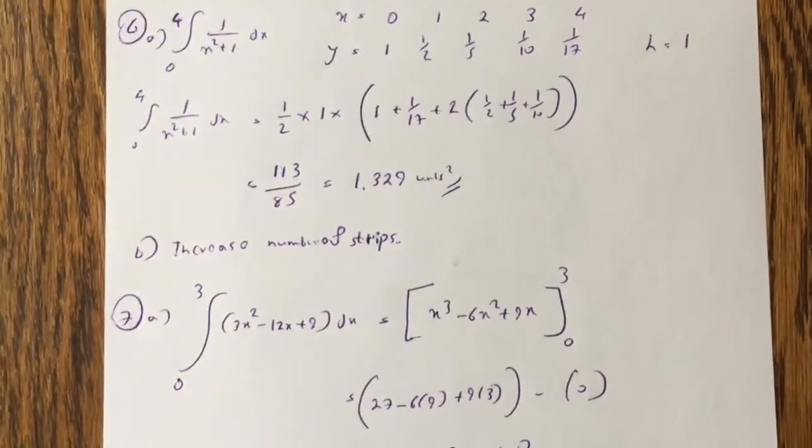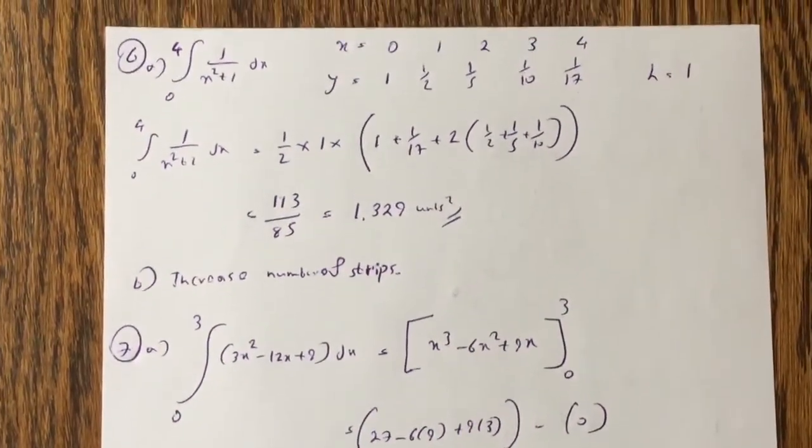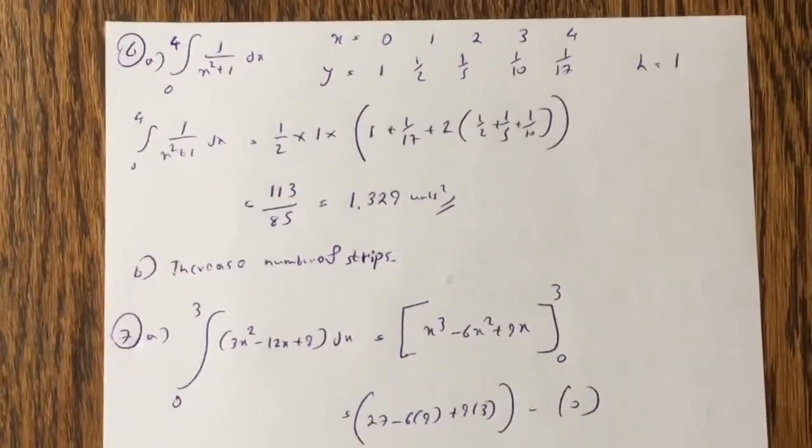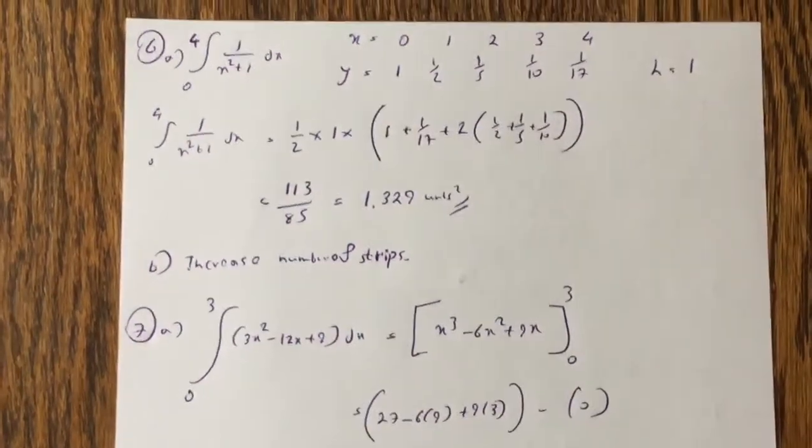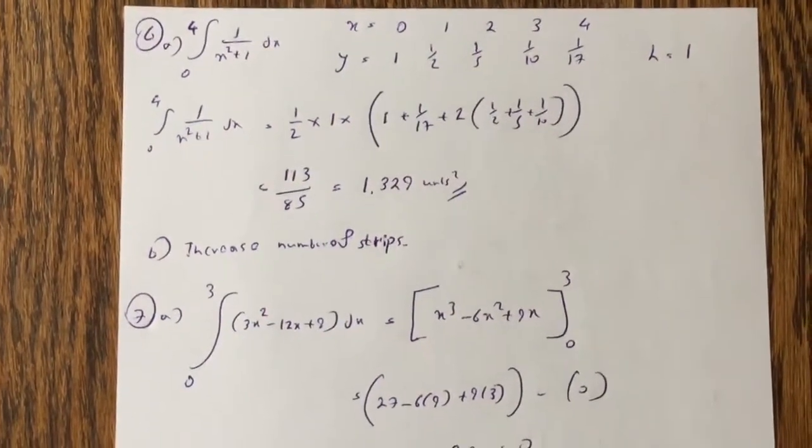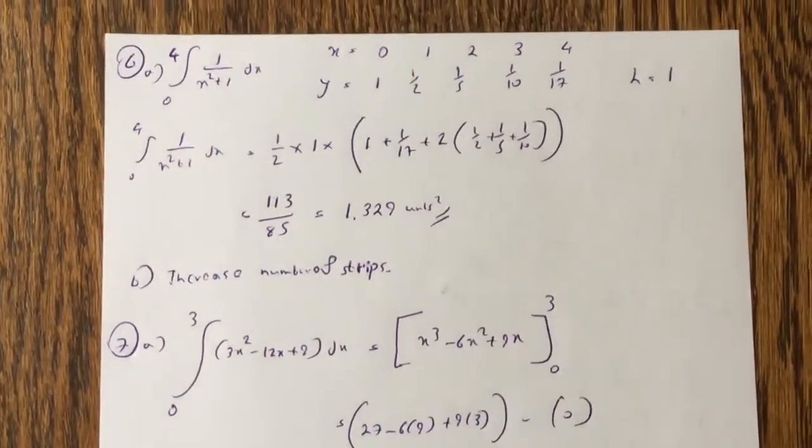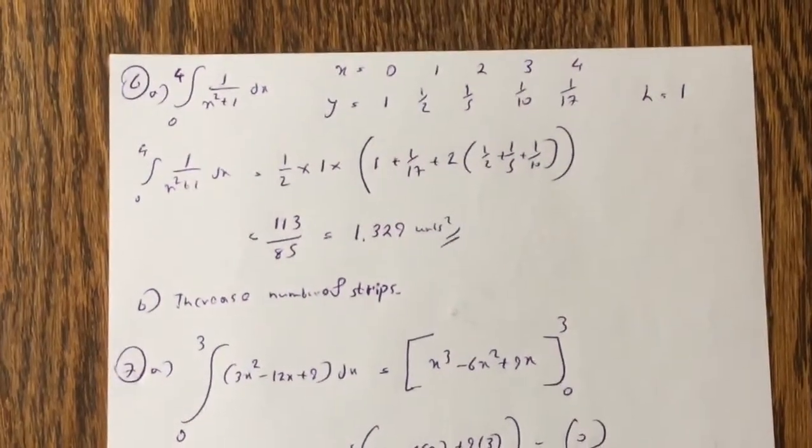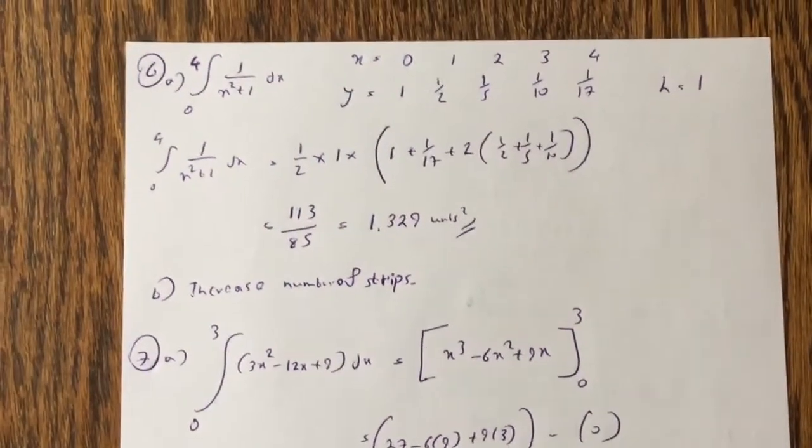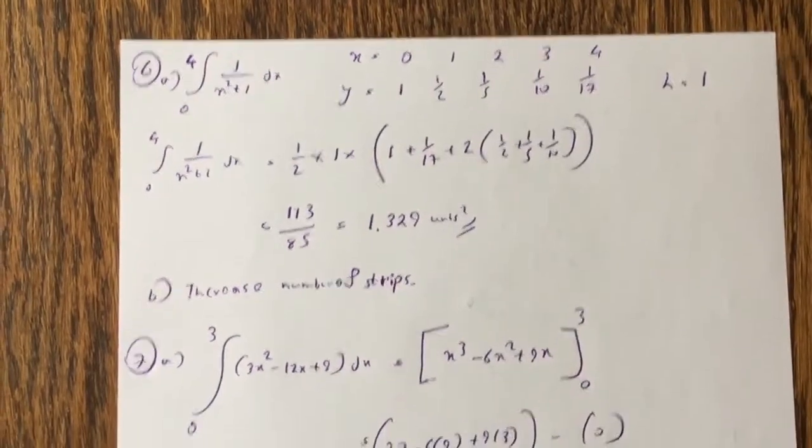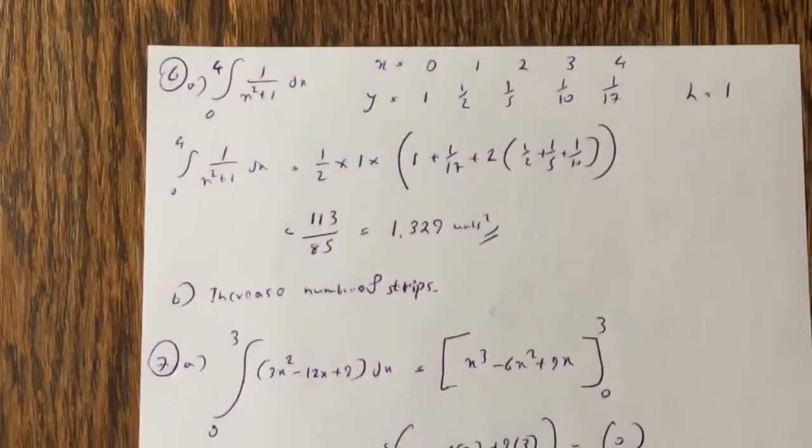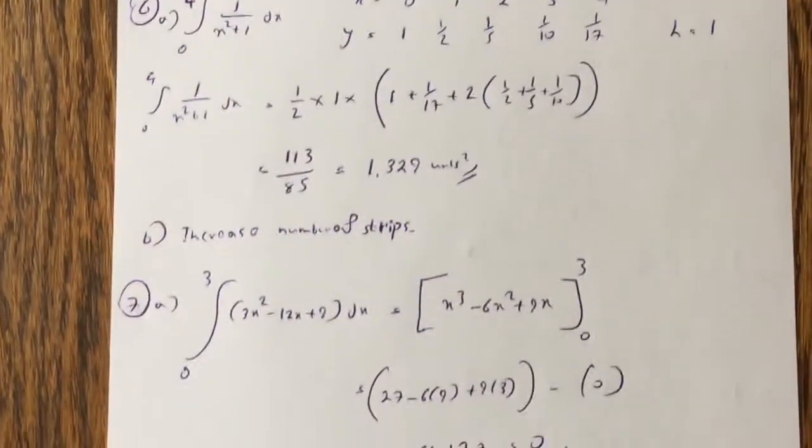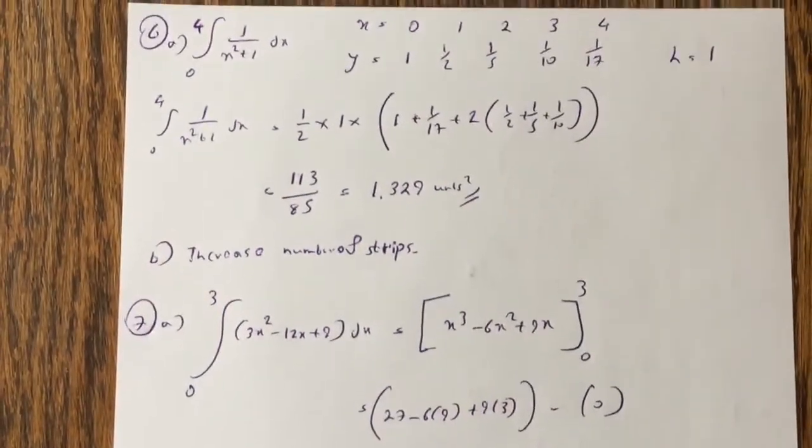You only make it decimals if it's completely impossible to do fractions, because the fraction will give you an accurate answer. So the integral equals half times height times 1 plus the last value, which is 1 over 17, and then 2 times the middle value is added up, and then you get 1.3 over 85, and it works out to be 1.329 units squared, that's the area. Question B, to get a better approximation, you just increase the number of strips.